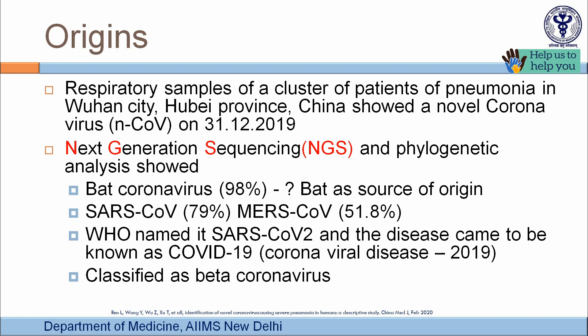The disease originated in Wuhan city, Hubei province, China, when a cluster of patients with severe lower respiratory tract infections had a novel coronavirus isolated in late December 2019. Next-generation sequencing and phylogenetic analysis showed 98% similarity to bat coronavirus, 79% homology with SARS-CoV, and 51% homology with MERS-CoV.